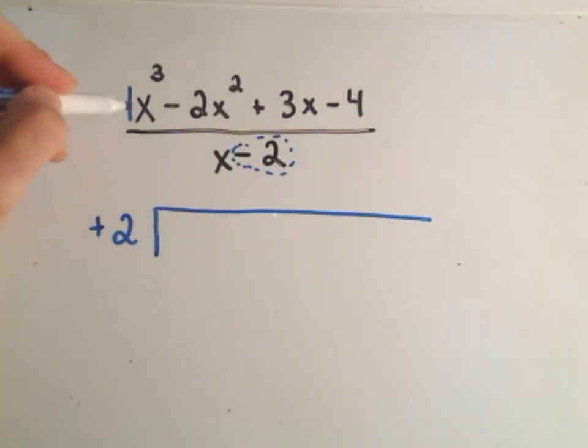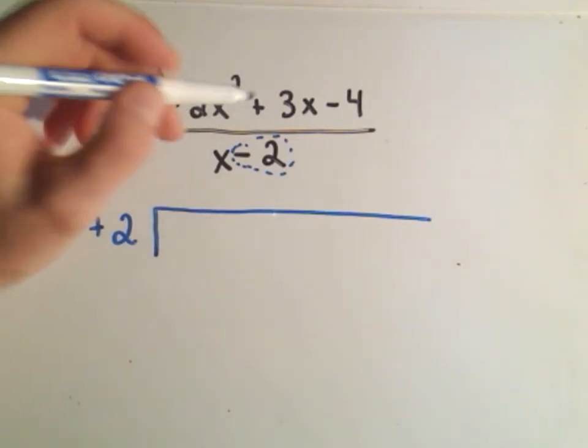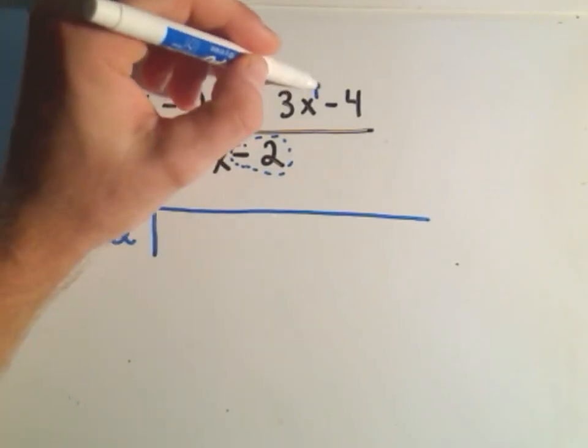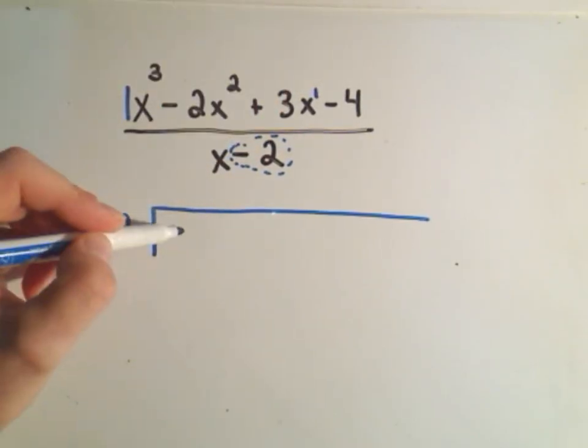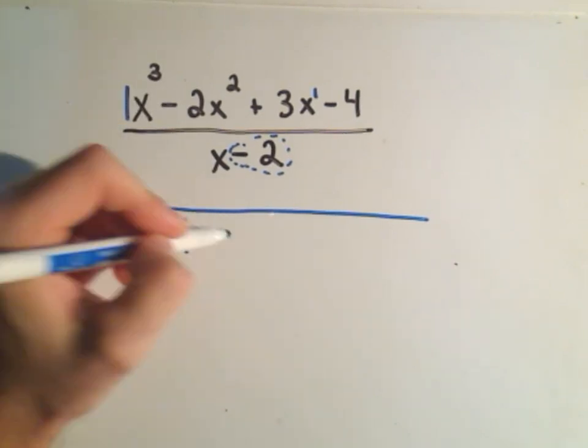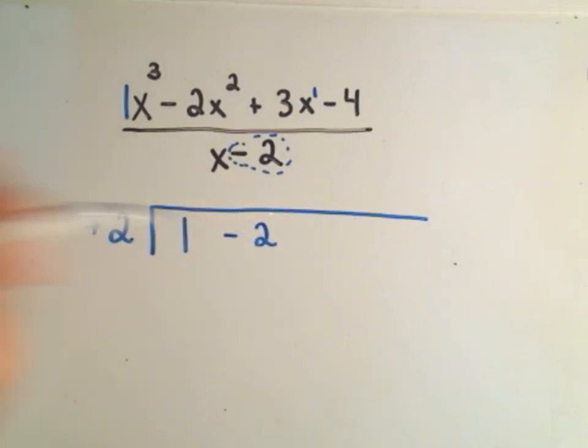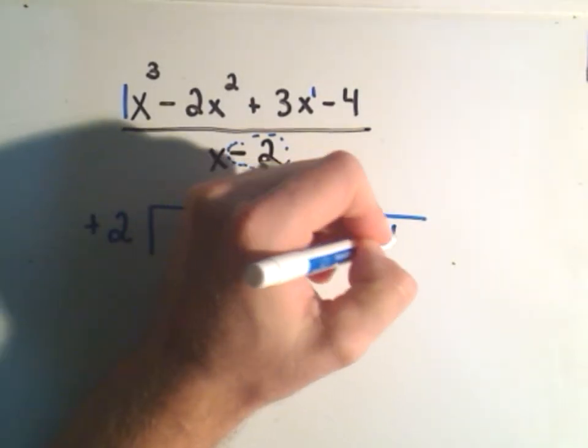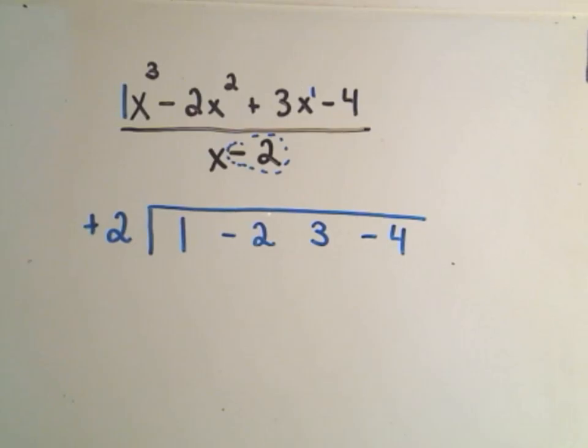And then notice I have 1x cubed minus 2x squared plus 3x minus 4. Notice there's no terms missing. It starts at the third degree, second degree, first degree, and then we just have a number. All we do is we write the coefficients. So 1, there's a negative 2 in front of the x squared, there's a positive 3 in front of the x, and there's a negative 4 just hanging out.